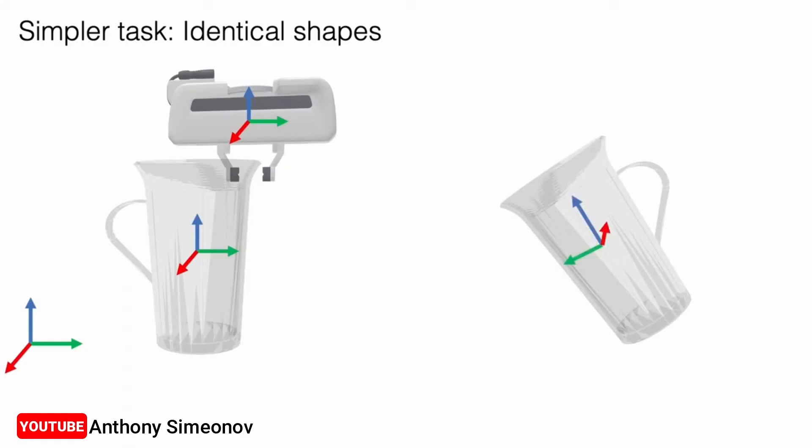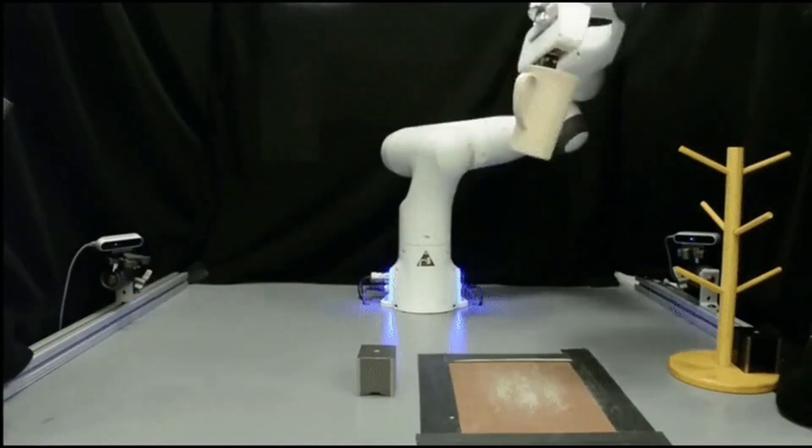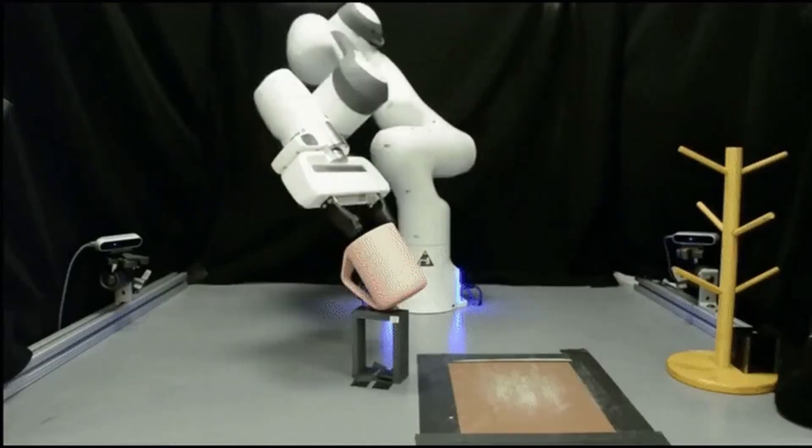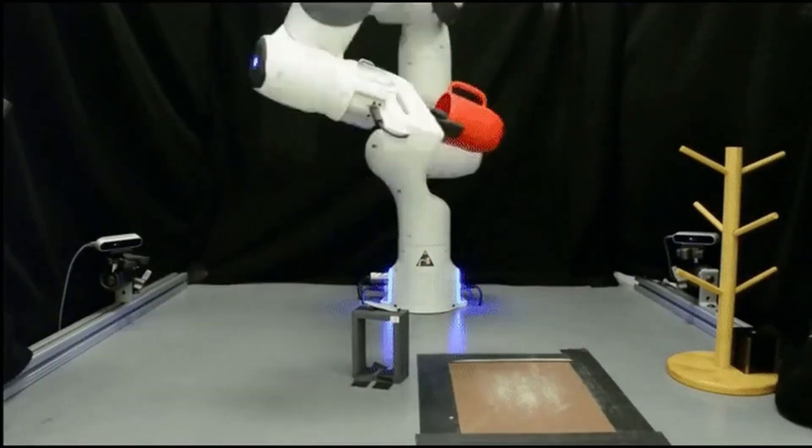Reprogramming that robot involves hand-labeling thousands of images that show it how to grasp these new mugs in order to train the system all over again. But a new technique developed by MIT researchers would require only a handful of human demonstrations to reprogram the robot.